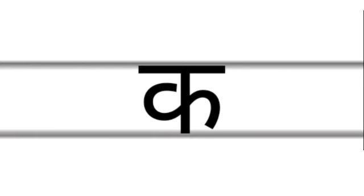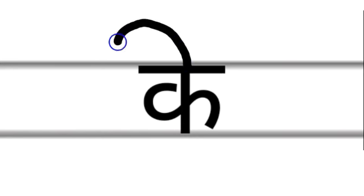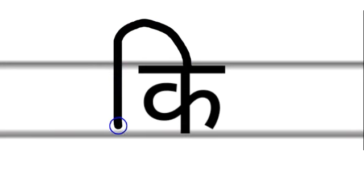Next letter: Ki. Add a hook on the top and pull it down to the left of the consonant to form a straight line. What is this letter, children? Ki.